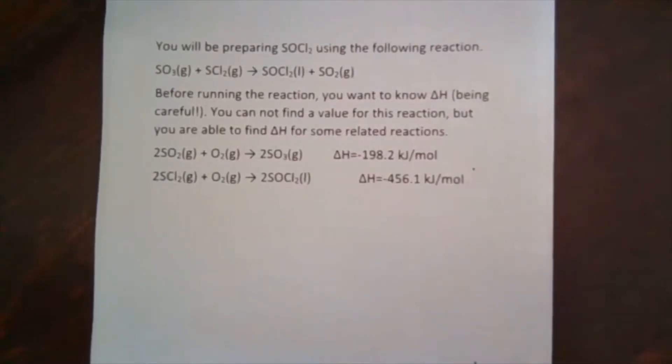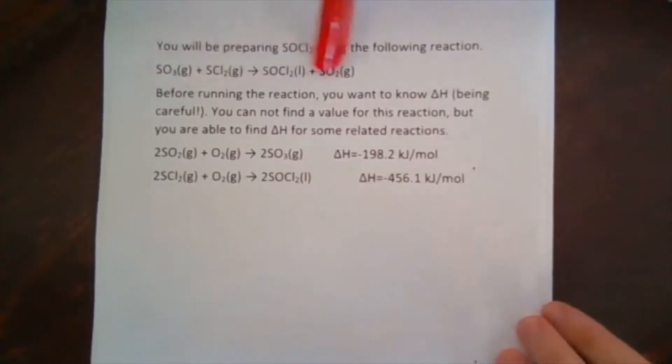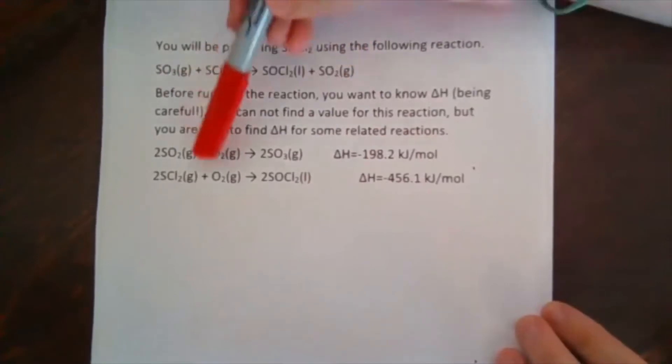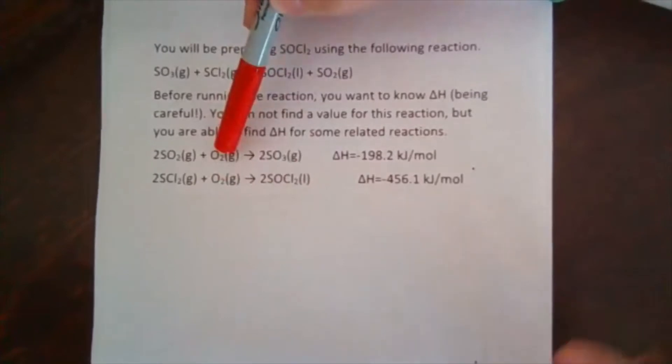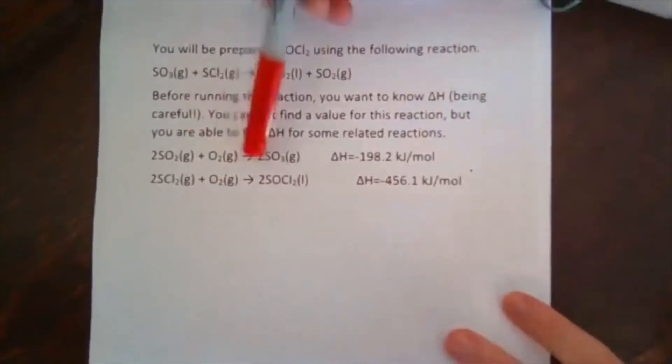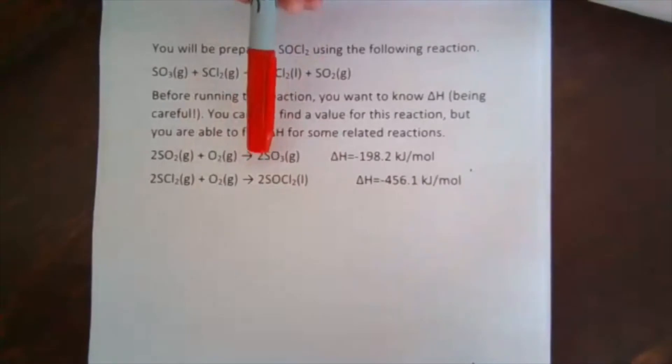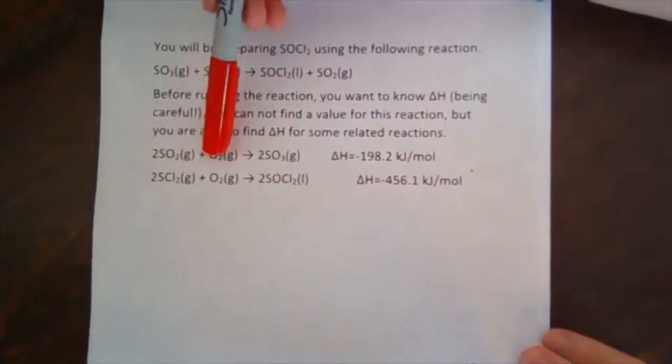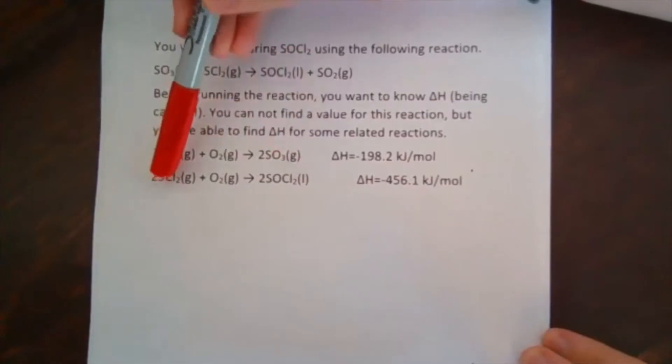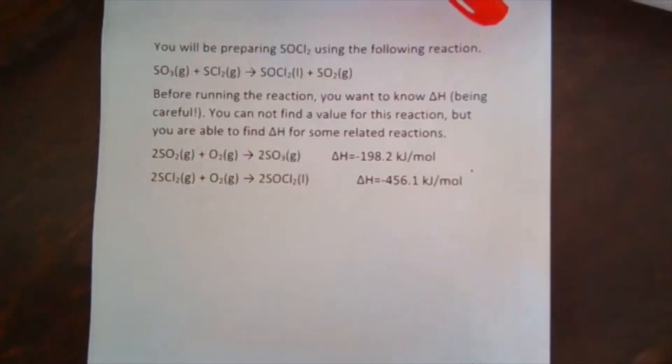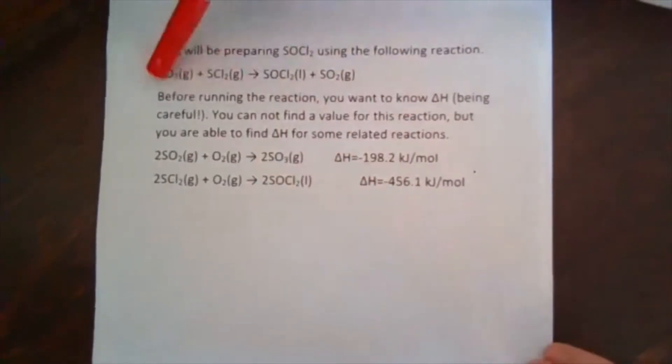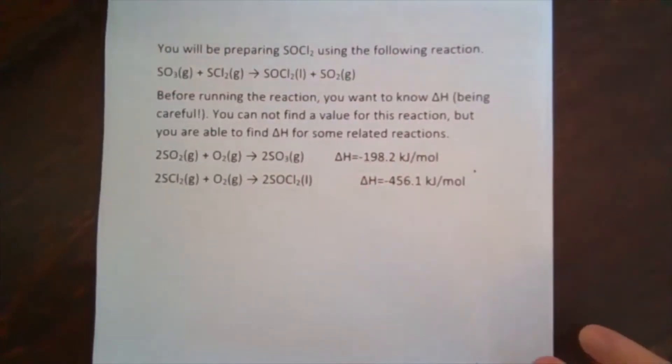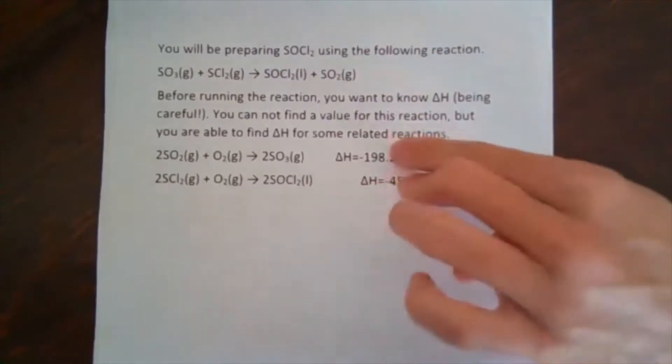So this is a big part of being careful, not just kind of haphazardly running chemical reactions. So there's no delta H for this. You can't look it up, but you find these other reference reactions. You'll note they're both combustion reactions. It's very common to be able to find delta H for combustion reactions. These are tabulated in large numbers. And so 2SO2 plus O2 gives you 2SO3 and 2SCl2 plus O2 gives you 2SOCl2. And so they each have an associated delta H going across.